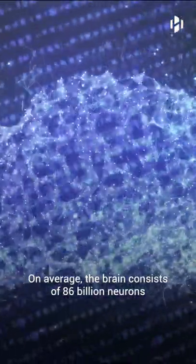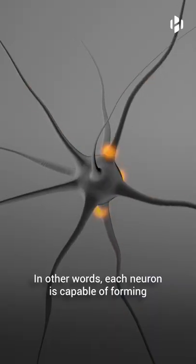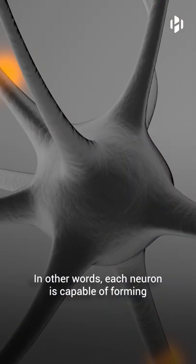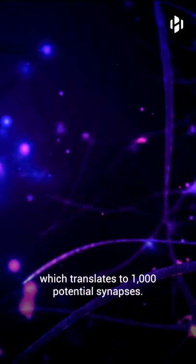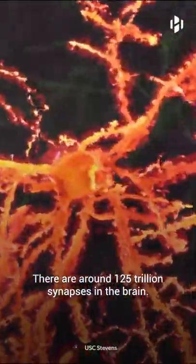On average, the brain consists of 86 billion neurons that make up over 100 trillion connections. In other words, each neuron is capable of forming around 1,000 connections, which translates to 1,000 potential synapses. There are around 125 trillion synapses in the brain.